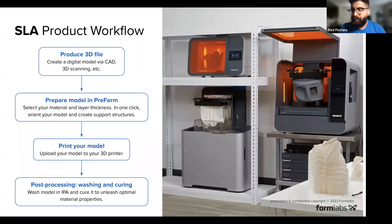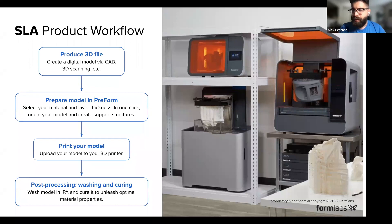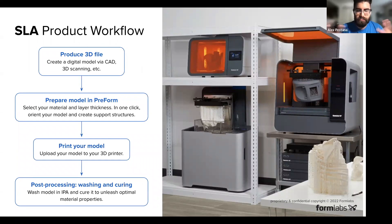You then print the part and move to post-processing. For SLA, because we're curing a liquid resin, there's residue on the part, so parts need to be washed — typically with isopropyl alcohol. You let the part dry and can either remove supports or cure the parts first and then remove supports. Because it's a single-material process, the supports are as strong as the rest of the model, so we've done a lot of work on touch-point design to make removal as easy as possible.